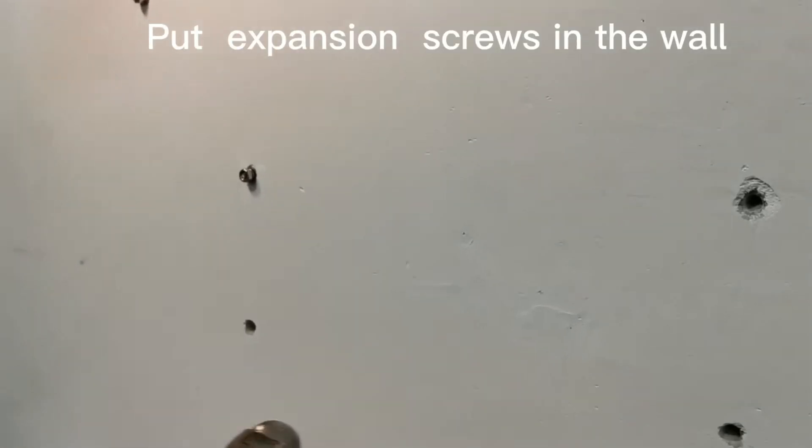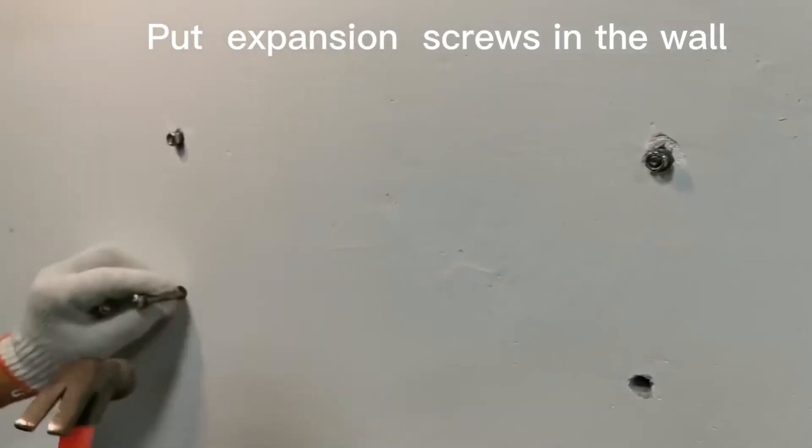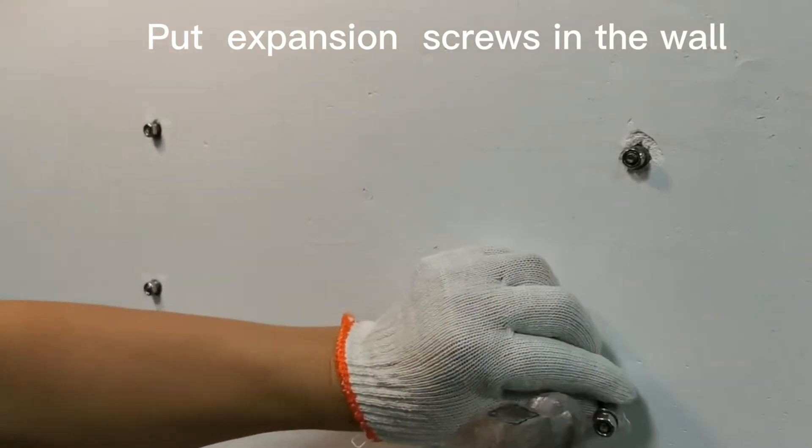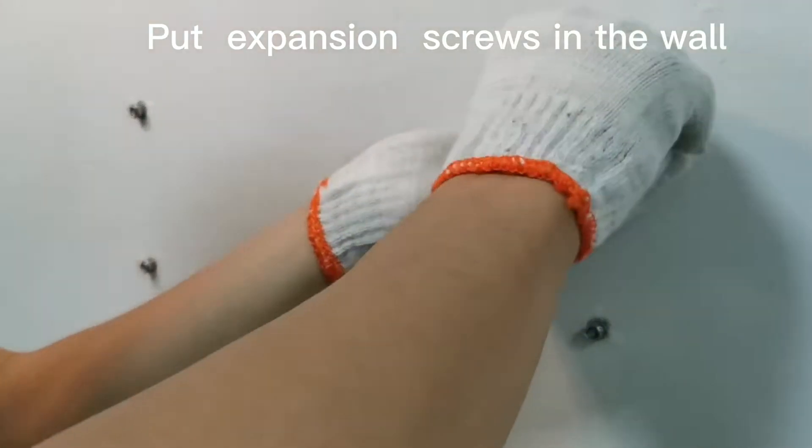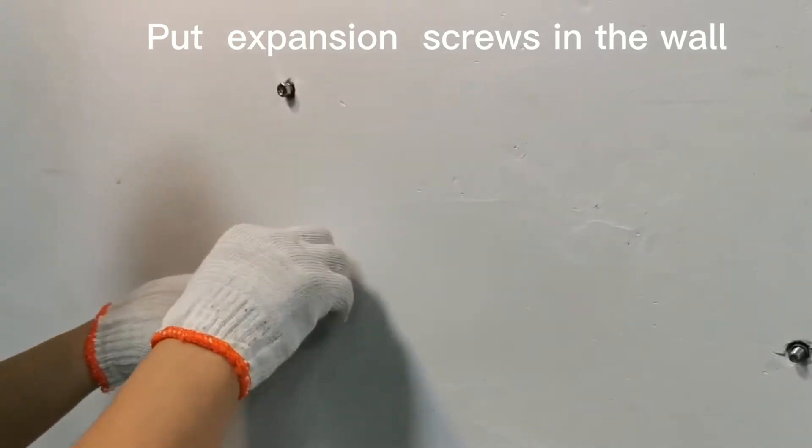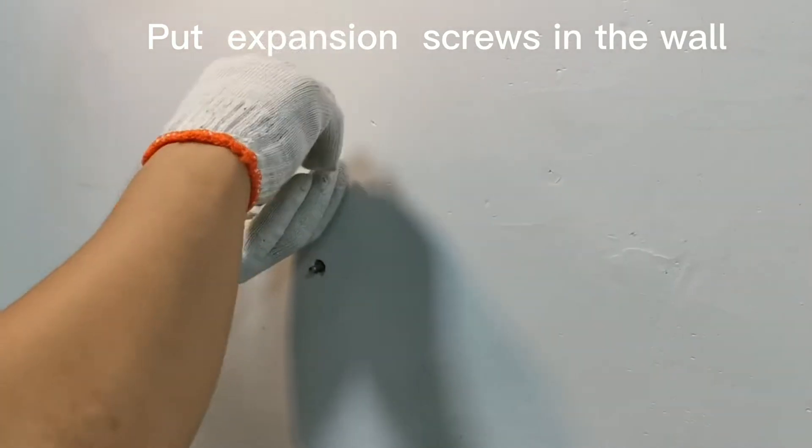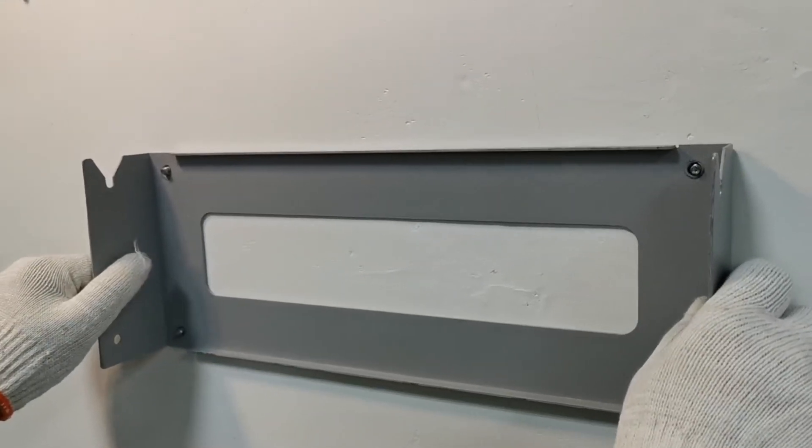Step 2: Install the expansion tubes into the holes and tighten them. Then use the expansion screws to install and fix the wall mounting bracket.